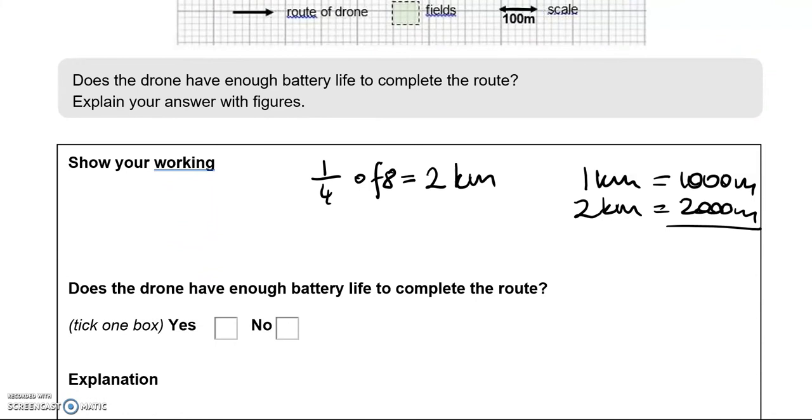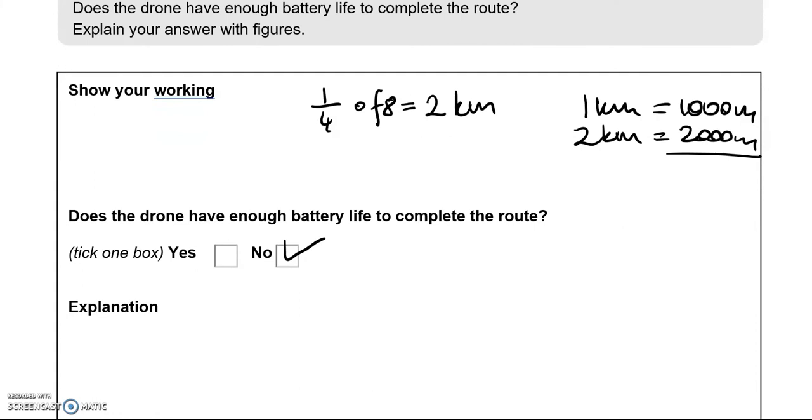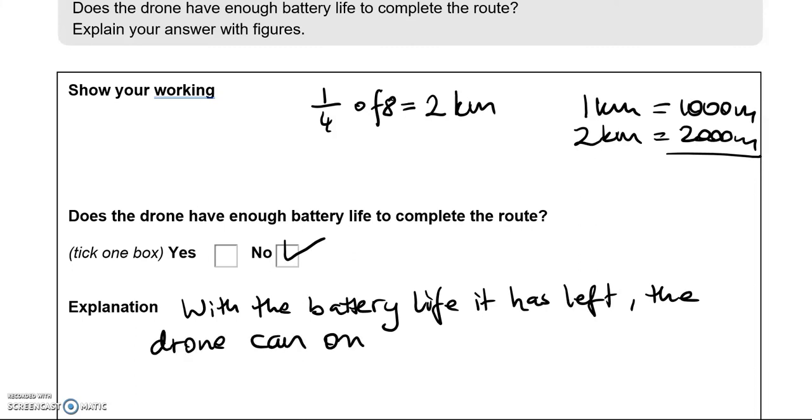Does the drone have enough battery life to complete the route? No. Explanation: with the battery life it has left, the drone can only do 2000 meters, not 2400 meters.